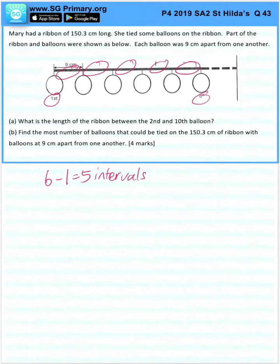Between the second and the tenth balloon, 10 minus 2 will be 8 intervals. One interval is 9 cm, so 8 times 9 will give us 72 cm as our answer.